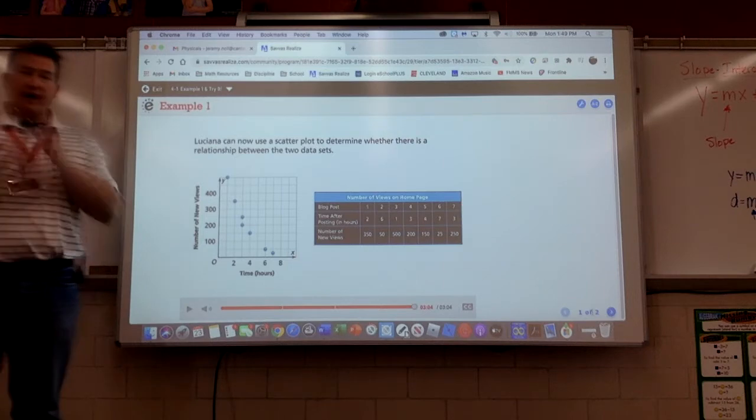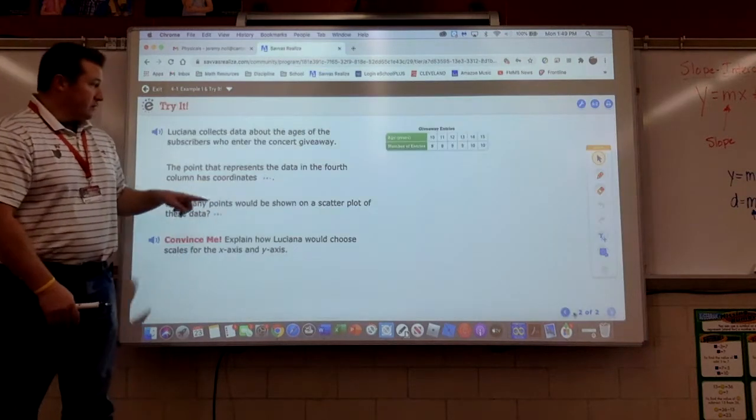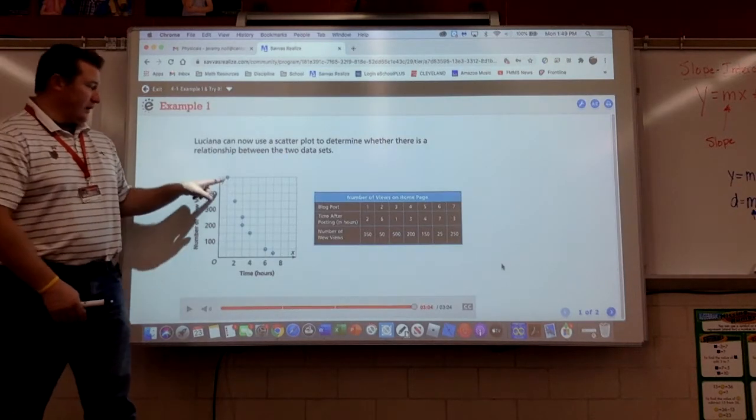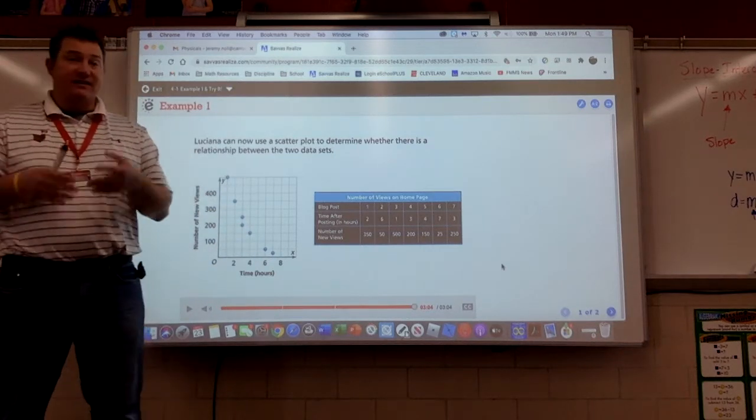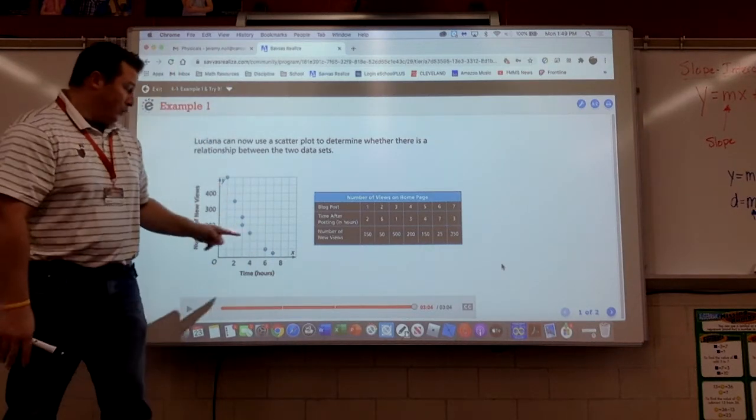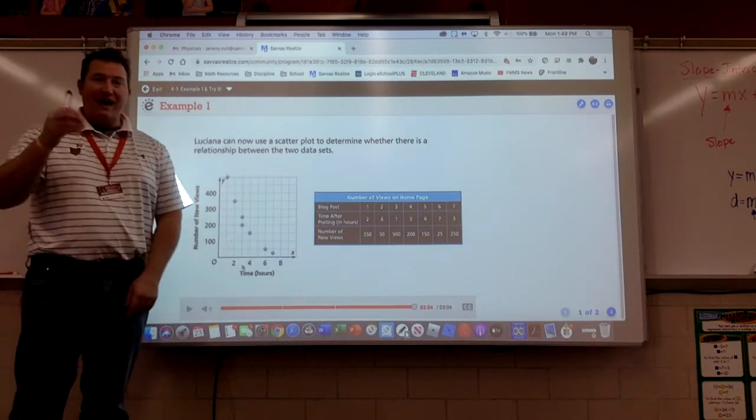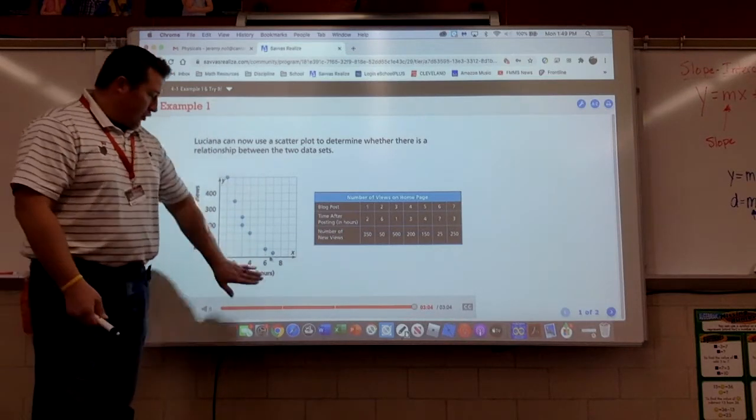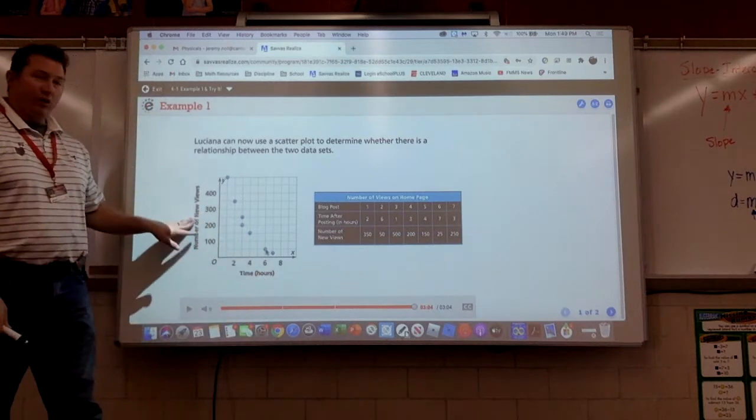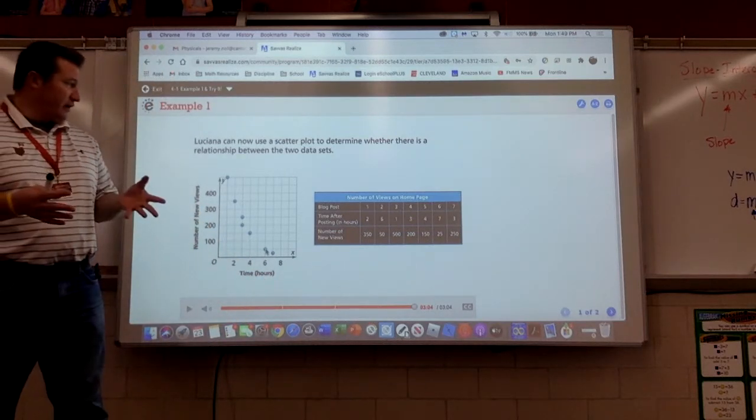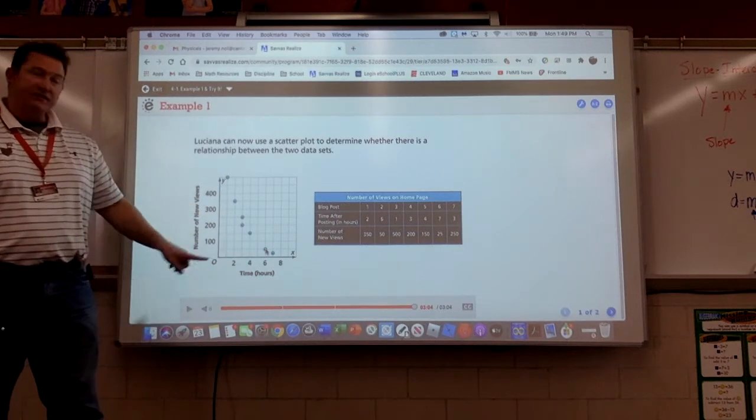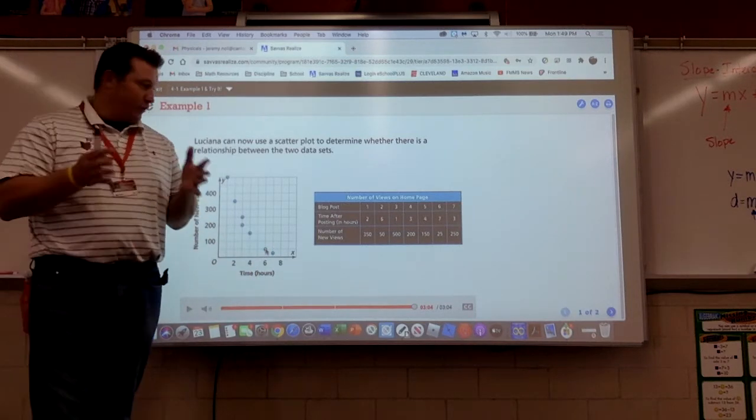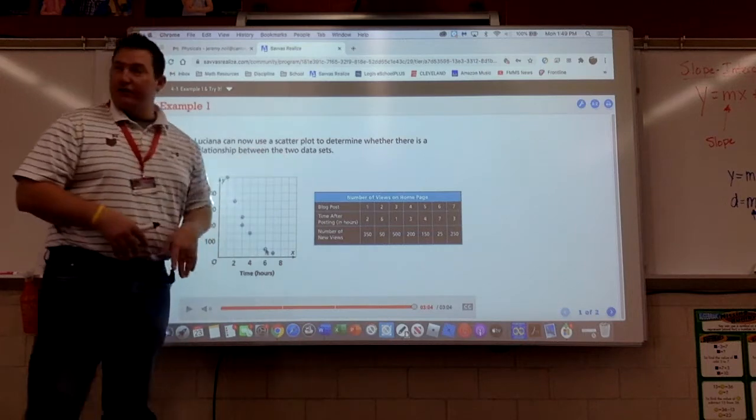Well, that's annoying. How do you determine the meaning of a data point on a scatter plot? How do you determine the meaning? Find the location of the data point. The coordinates are time after posting and number of views. For example, 3200 means that three hours after a particular post, there were 200 new views. Luciana can now use a scatter plot to determine whether there is a relationship between the two data sets.